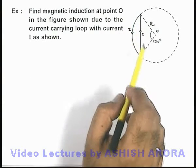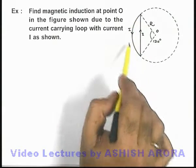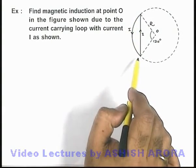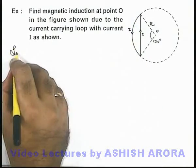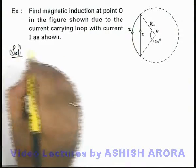One side is a chord of the circle and the other side is an arc on the same circle. In this situation we wish to find out the magnetic induction at point O.